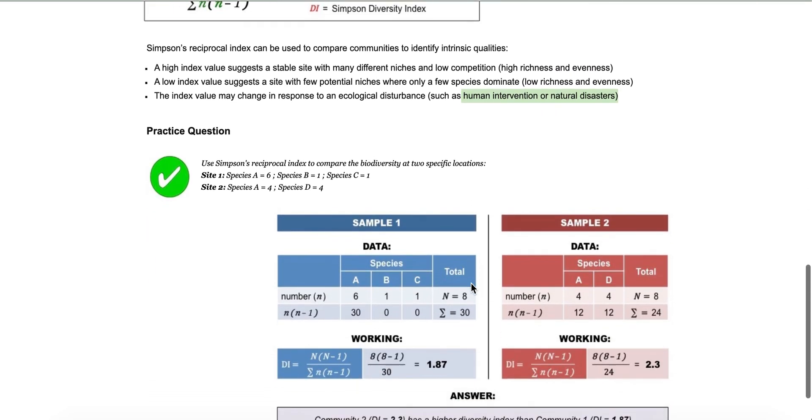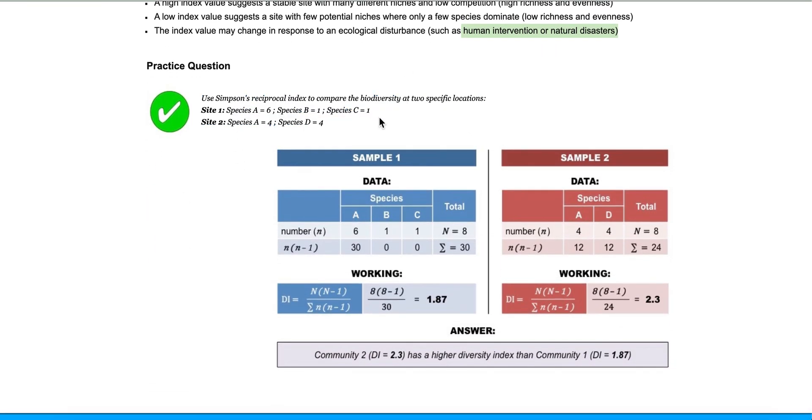So here is a practice question here, and they've given you a sample data set. So it's site one. There are three species, species A, B, and C, and they tell you how many individuals there are. And then there's site two, which has species A and D. And it tells you how many individuals there are. So notice that these sites don't have the same amount of species right away. That's okay. We're trying to compare them to see which one is more diverse, right? Remember, we're looking at two factors, richness and evenness.